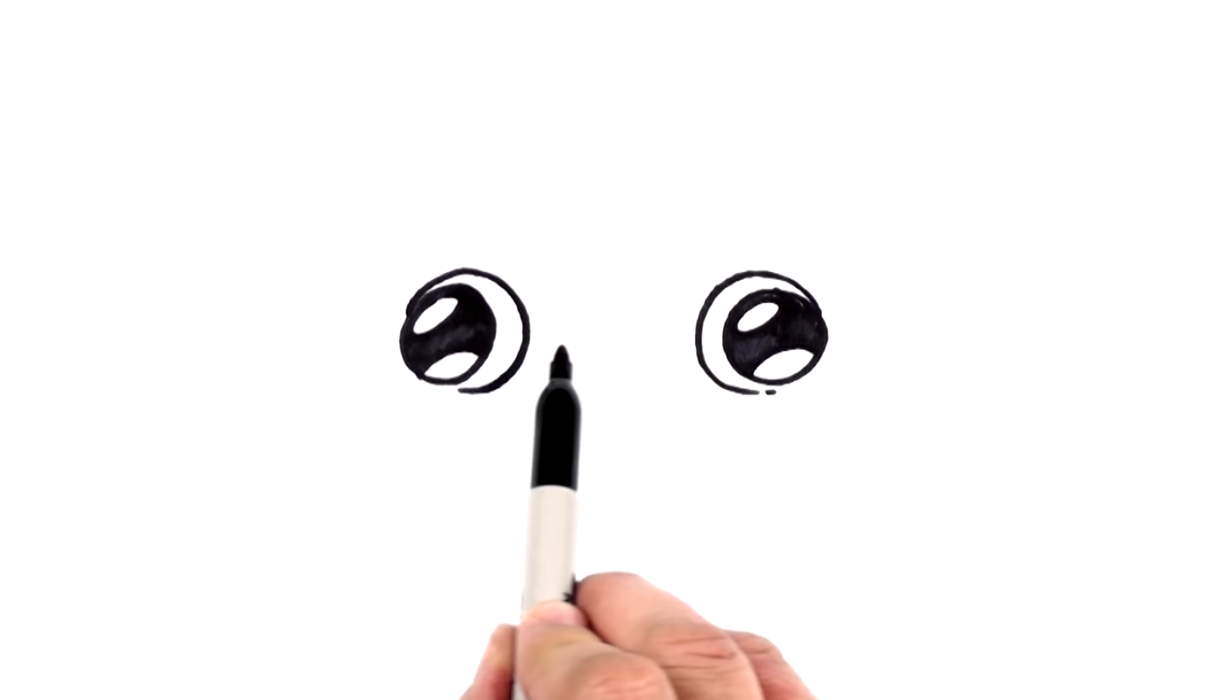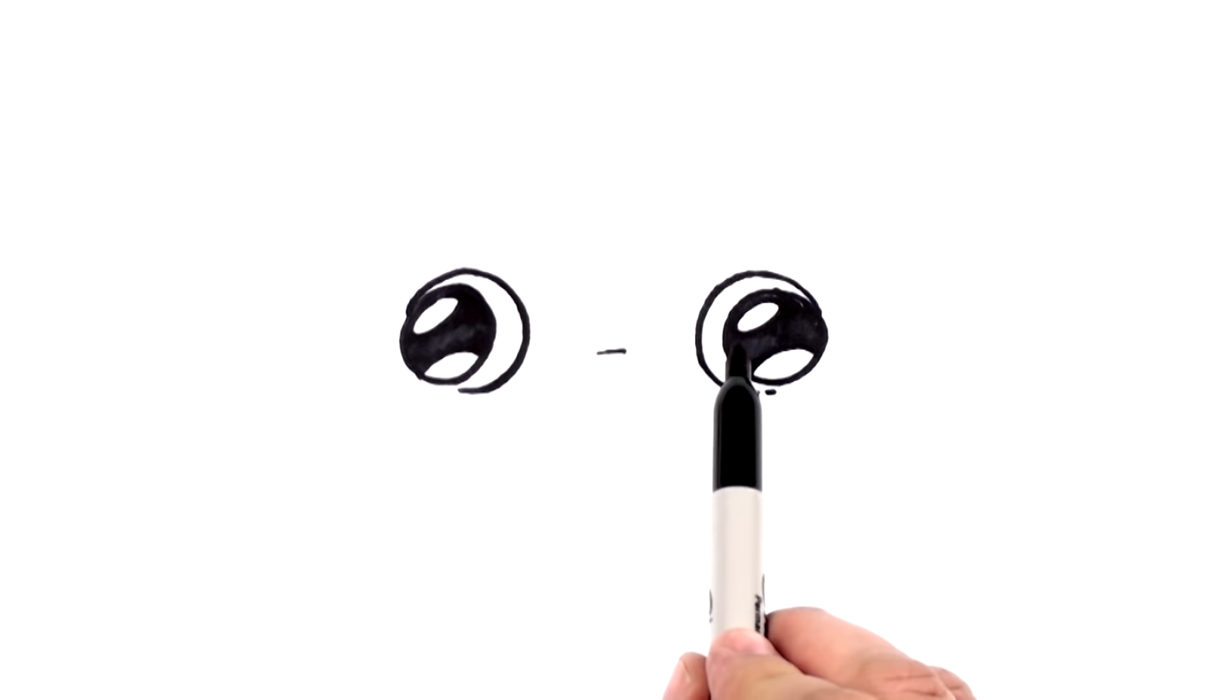Now, the nose is going to fall right here between the eyes, right about here. So not quite to the center, but just below the center of eyes. And we're going to draw a little curve right there.